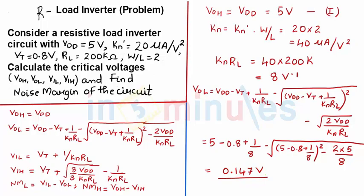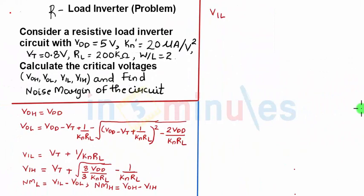Let's go ahead and find VIL. The equation of VIL also is given on the left hand side. VIL equal to VT plus 1 by KN RL. VT is 0.8 and KN RL is 8. This will give me VIL equal to 0.925 V.